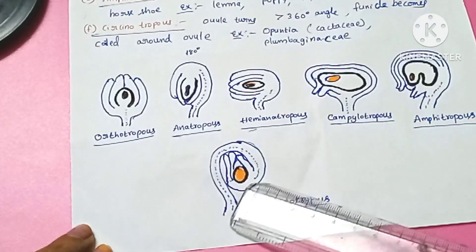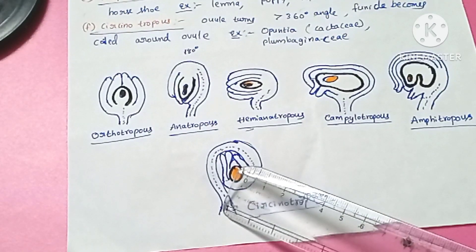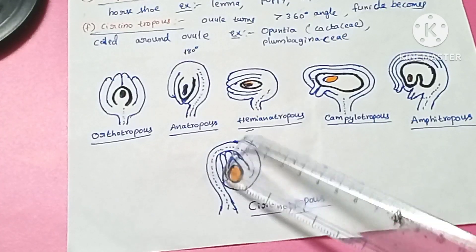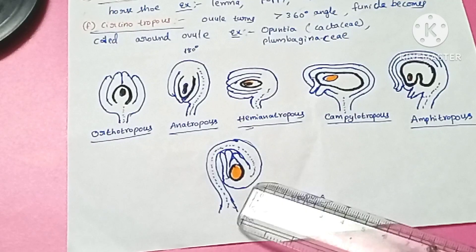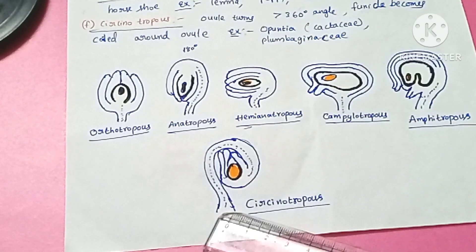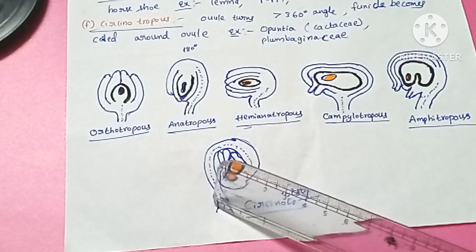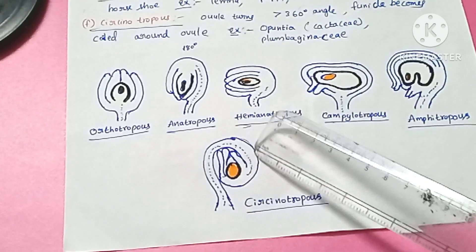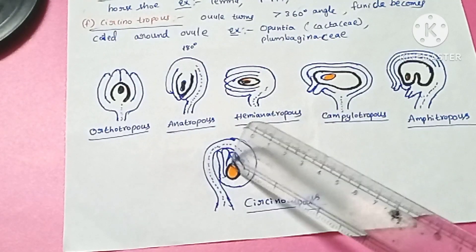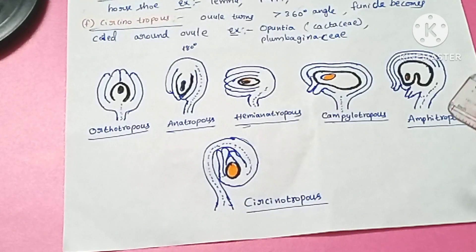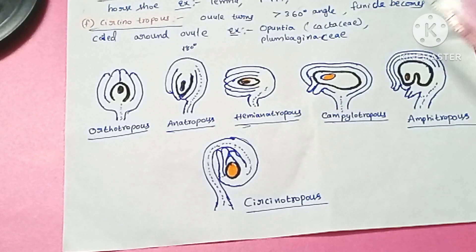The sixth and last type is circinotropous ovule. Here the ovule turns more than 360 degrees, and the funicle becomes coiled around the ovule. Examples include Opuntia and members of the cactaceae and plumbaginaceae families.